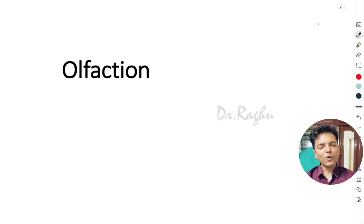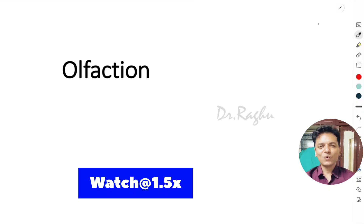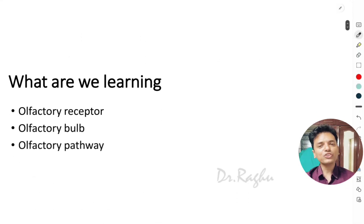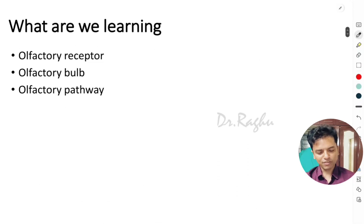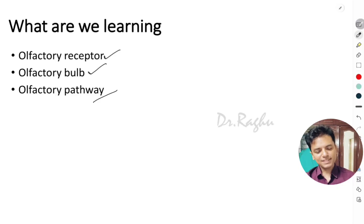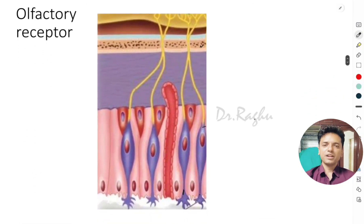Olfaction, the sense of smell. In this video we will concentrate on three important concepts in olfaction: the first one is the olfactory receptor, the second is the olfactory bulb, and at last we will see the olfactory pathway. Let's start by understanding where the olfactory receptor is present.